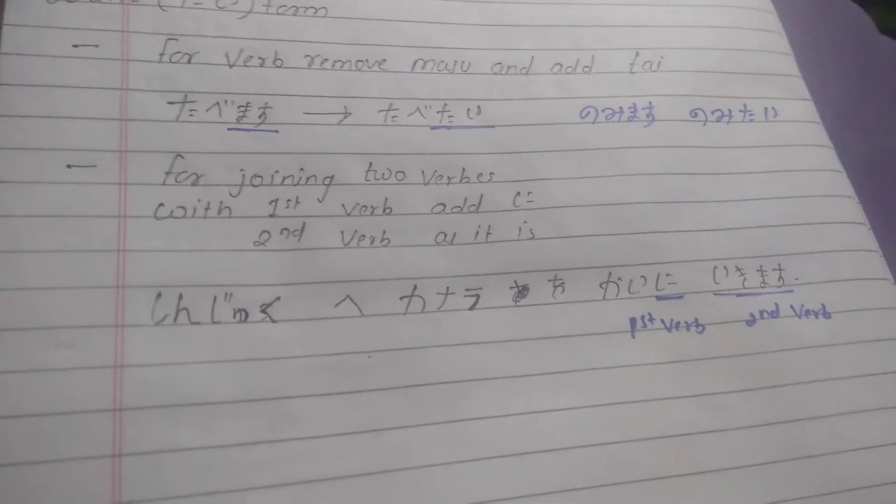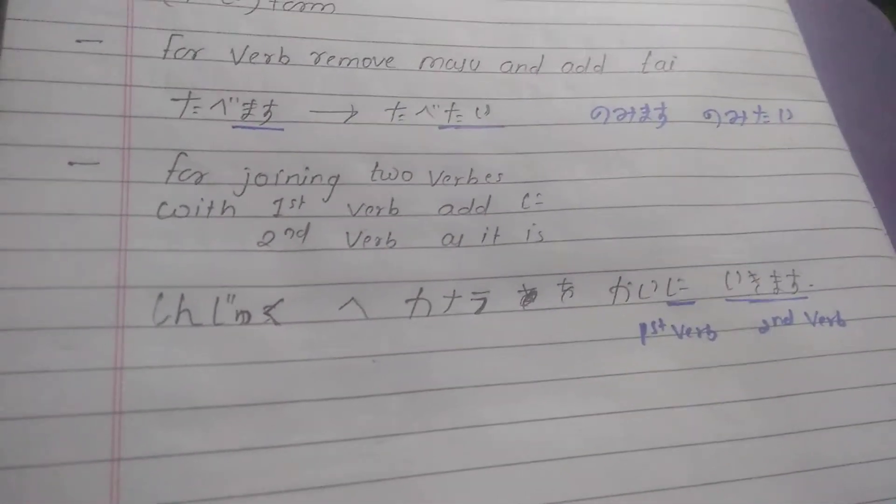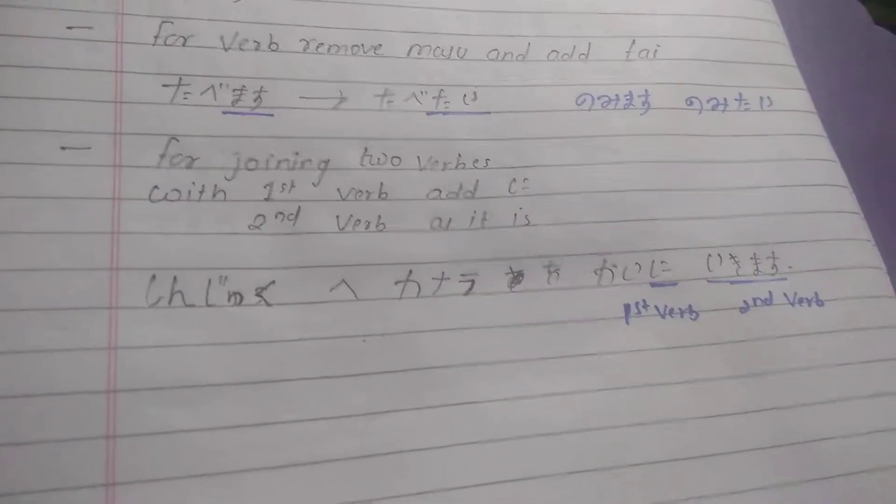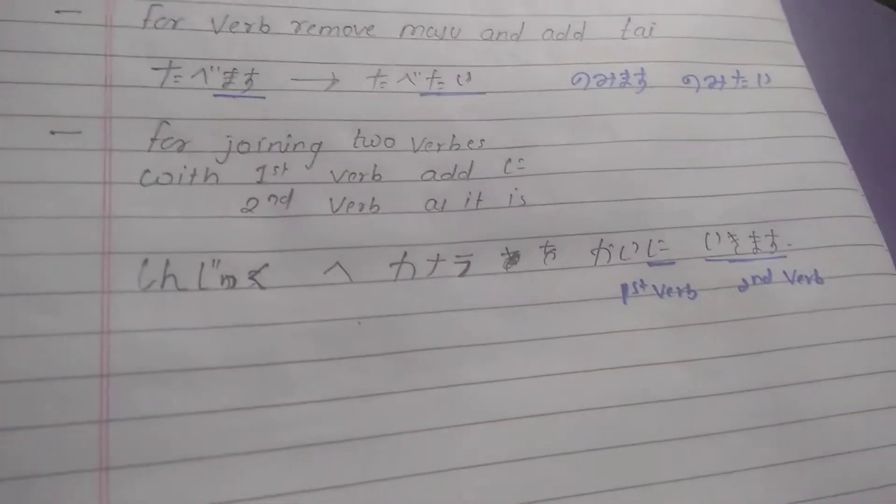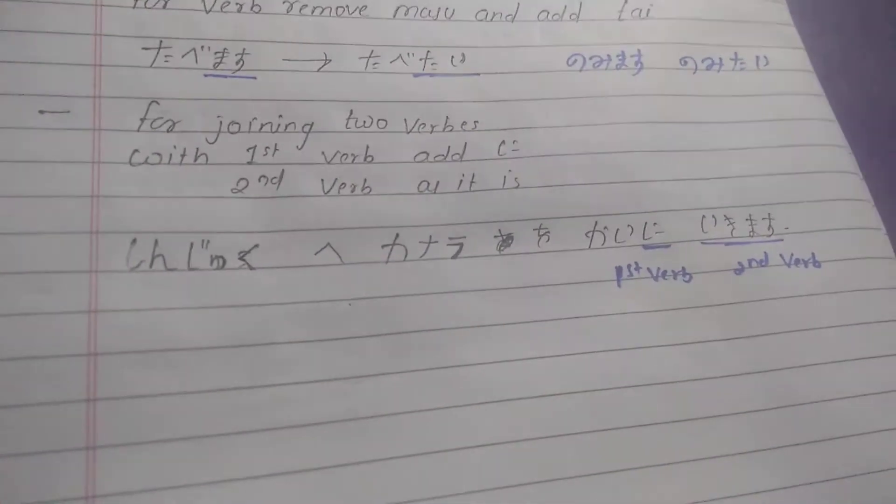The second rule is if there are two verbs back to back, then replace the first verb - add ni to the first verb, and the second verb stays as it is.